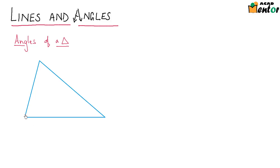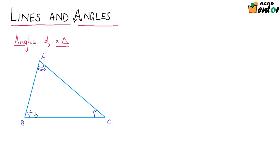As you can see, we already have a triangle here. Let's start by naming it — let's call it A, B, C. And let's name the angles as well. We can call them angles 1, 2, and 3. So if this is angle 1, angle 2, and angle 3.